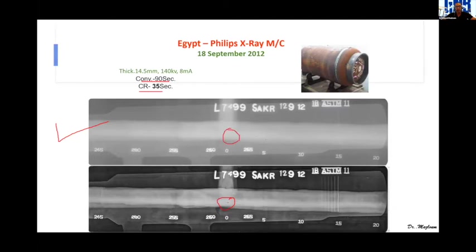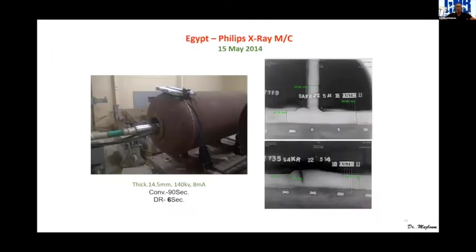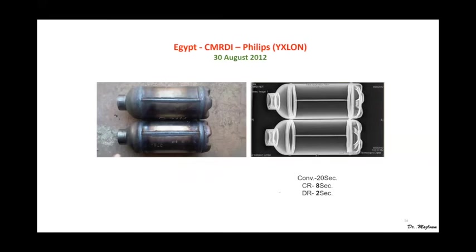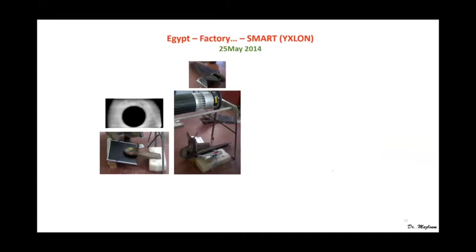Another demonstration: for a 14.5 mm wall single-wall single-image inspection, the conventional shot took 90 seconds and DR took only 6 seconds. For firefighting cylindrical vessels, the time saving comparing conventional, CR, and DR is significant. In another factory in Egypt, similar results were achieved.